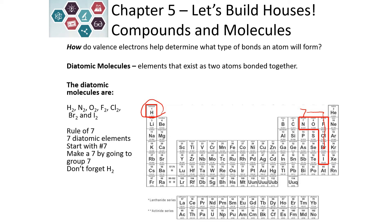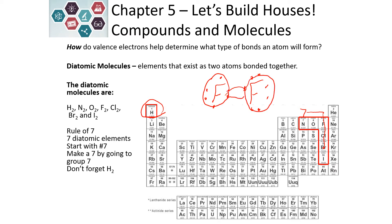Hydrogen is also a diatomic molecule. The reason for this is that if we look at valence electrons — for example, fluorine has seven. If it combines with another fluorine which also has seven, by sharing two electrons, those electrons count towards each fluorine atom, so each fluorine would have eight. It forms a chemical bond by sharing, and the electrons count towards each atom, allowing them to achieve the full octet.